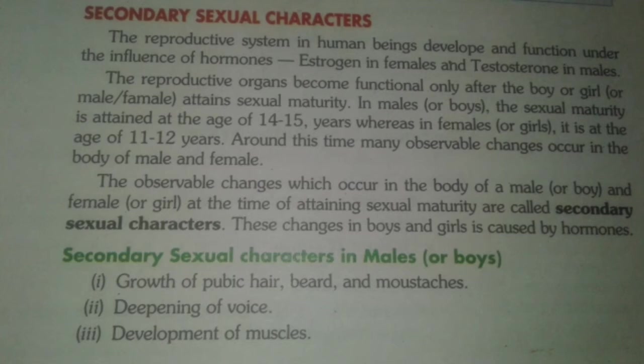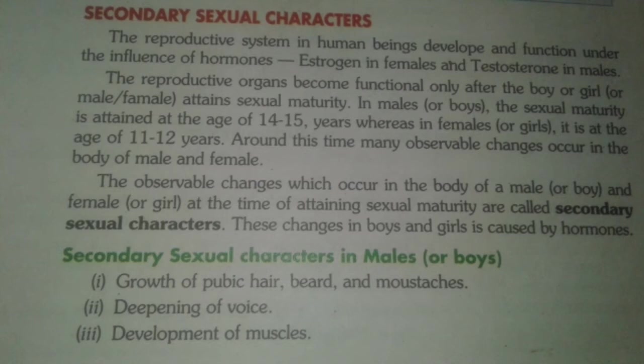The observable changes which occur in the body of the male and female at the time of attaining sexual maturity are called secondary sexual characters. These are all the characters responsible for showing sexual maturity — they indicate that this individual has gotten sexual maturity. These are hormonal changes which occur inside your body, showing that you are on the boundary of the maturity period and are now able to start your reproductive life.